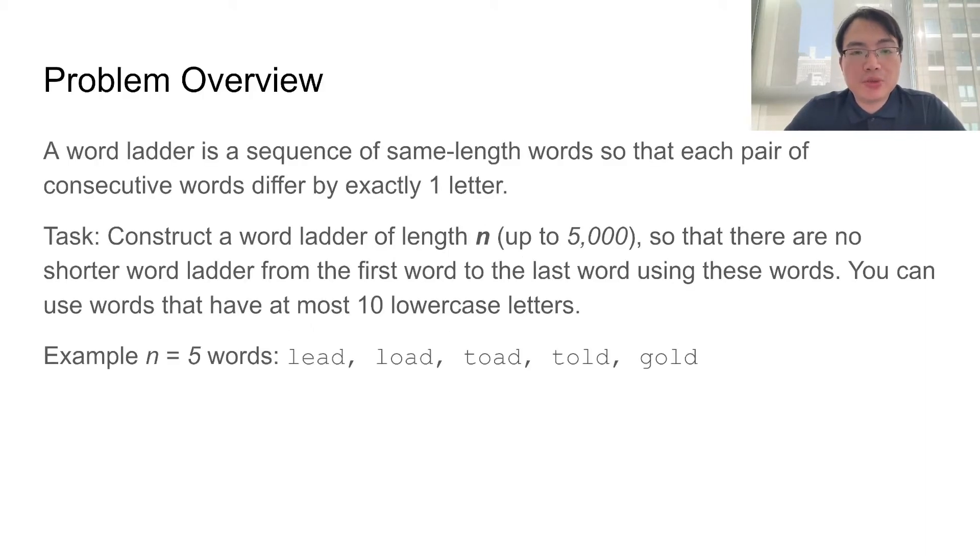A word ladder is a sequence of same-length words so that each pair of consecutive words differ by exactly one letter. In this task, we are going to construct a word ladder of length n, where n is up to 5,000.